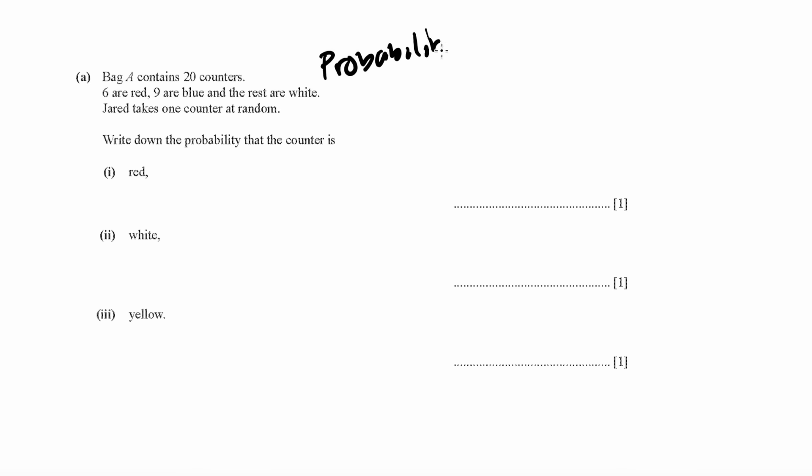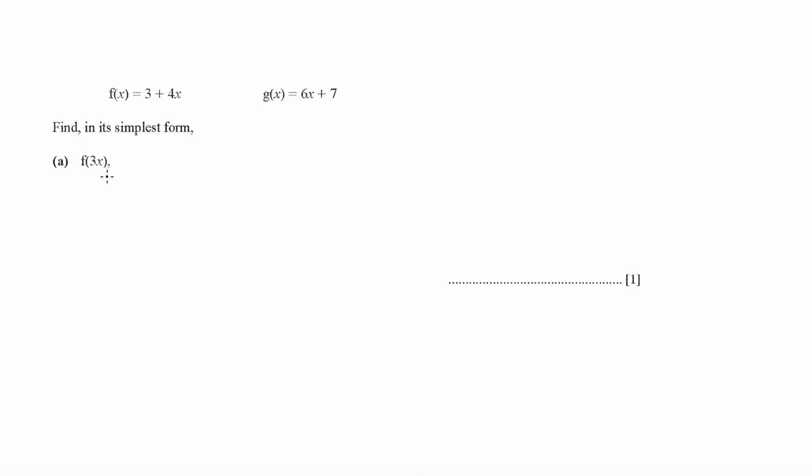For a question on probability, here's how you answer this question. First of all, they've given the total number; they've said six are red, nine are blue, the rest are white. So I write down the probability. What you simply have to do is there's a chance to pick six red balls out of the 20, so the probability is 6 out of 20. There's five white balls, so the probability is 5 over 20. And for yellow, since there are no yellow balls, the probability will be zero.